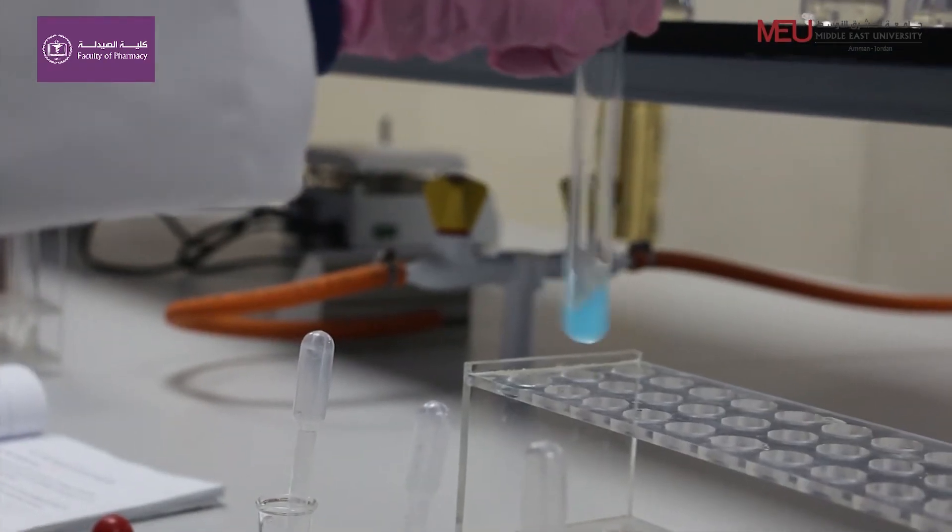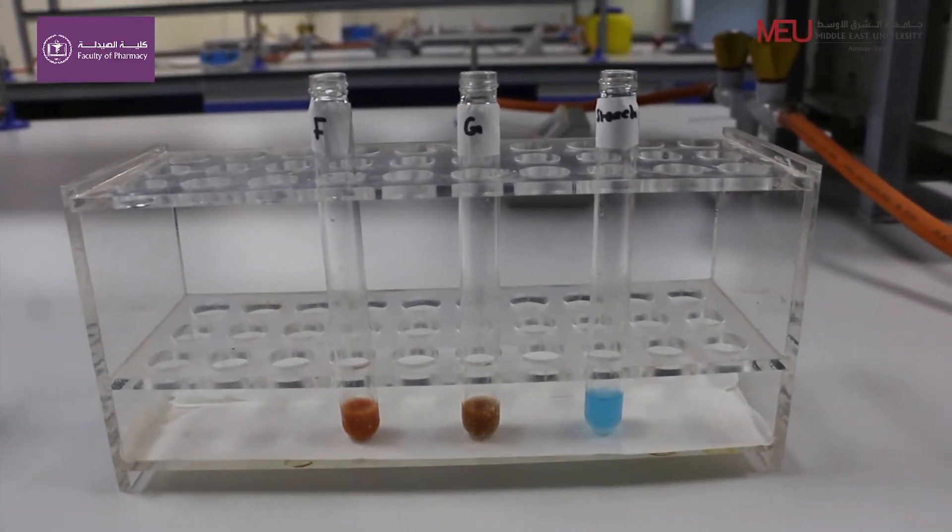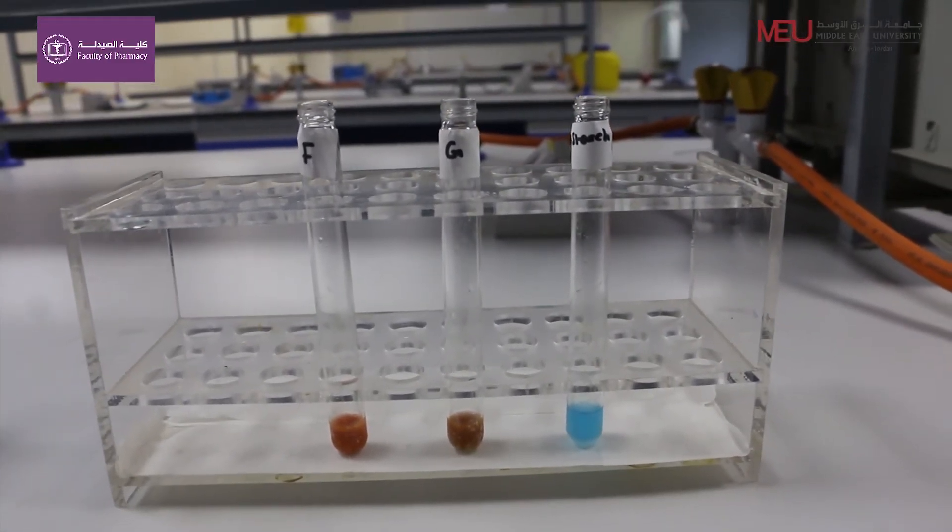Add 2 ml of Benedict's reagent. Mix it and boil it for 3 minutes using the water bath. The color of the mixture is a guide to the amount of sugar in the solution.